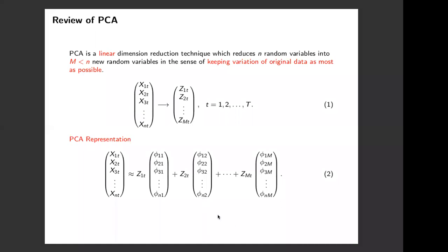From this representation, we can see that our new random variables found in PCA are common features shared by all the small n random variables, since each can be written as a linear combination of the new random variables. If we have small n random variables that share some common information with each other, PCA can give us dimension reduction results. The sense of finding optimal new random variables in PCA is that they can keep the most variation of the original random variables.